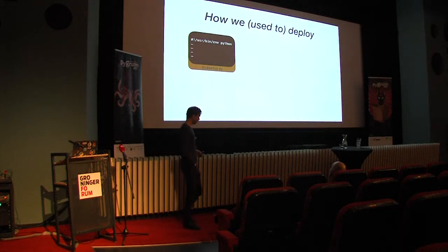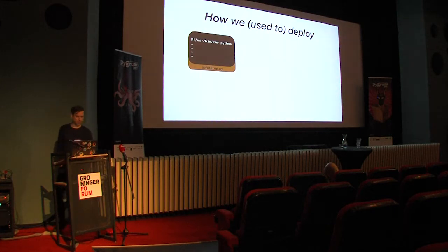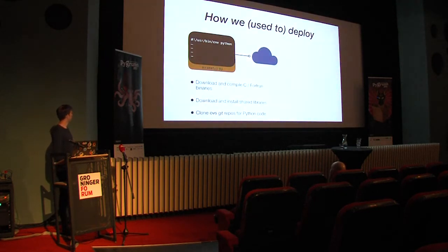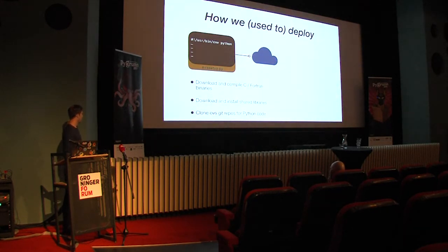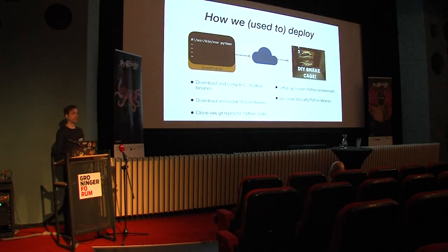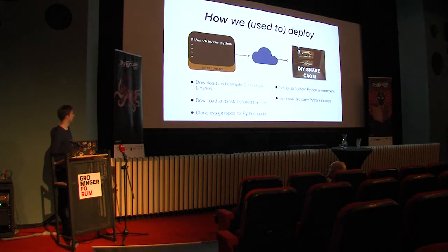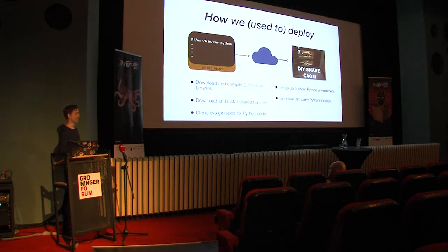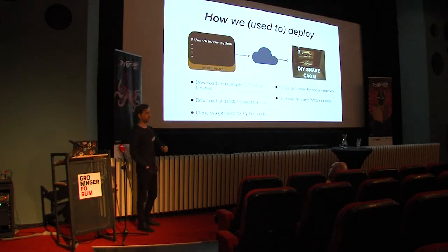We have software that does all this. How did we used to deploy it? We had a homegrown installation script that you download and run. It downloads and compiles C and Fortran binaries, downloads and installs shared libraries, clones our Git repositories, sets up a custom Python environment, and pip installs third-party Python libraries. This worked great for more than 15 years, but it's starting to feel its age. When we roll out to new installations we get tricky support questions because it's a homegrown solution — you can't Google it on Stack Overflow. We'd rather give support on the science, not on installing things.